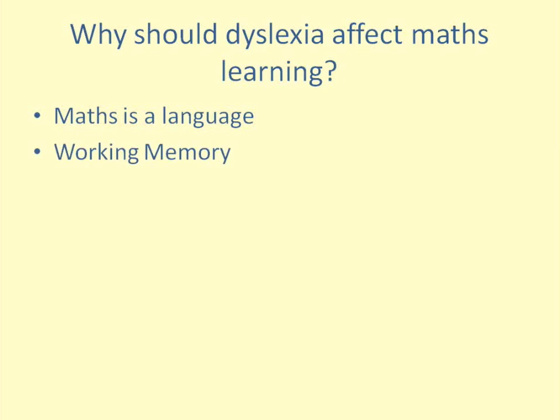Working memory, which we know for dyslexics is weak, is really important in maths. It's virtually impossible to do any kind of mental calculation unless you're using your working memory, and unfortunately, with very little working memory, sometimes people find it extremely difficult to do all sorts of mental calculation. Times tables is one of the things that's particularly difficult, and there are some strategies for overcoming this, but we'll come to those later.